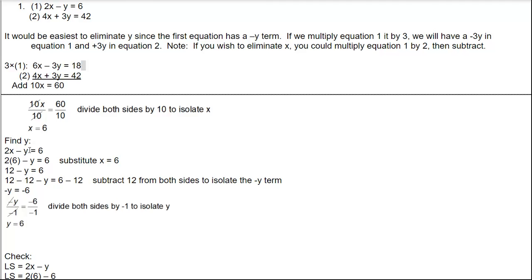To find y, we substitute x = 6 into the first equation, 2x minus y equals 6. So 2 times 6 is 12, minus y equals 6. Subtracting 12 from both sides gives negative y equals negative 6. Dividing both sides by negative 1: positive y equals positive 6.